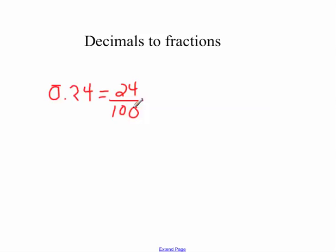The next step then would be to reduce that fraction into lowest terms by dividing both the numerator and the denominator by 4, so 24 hundredths equals 6 twenty-fifths.